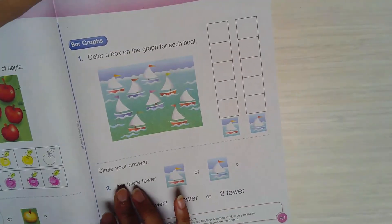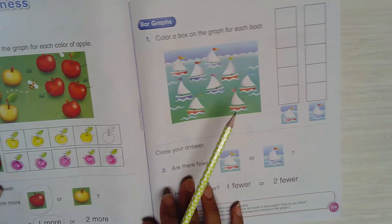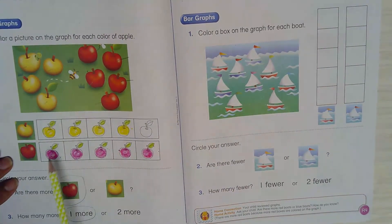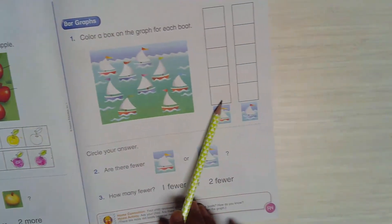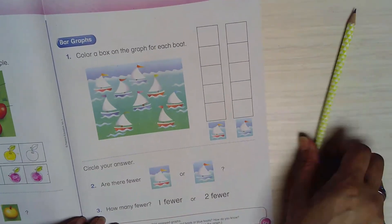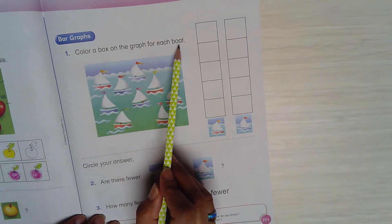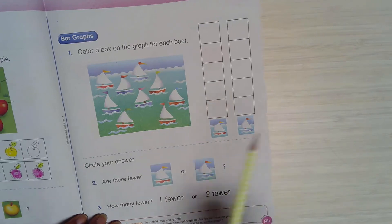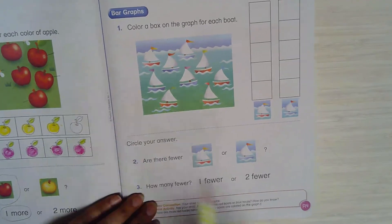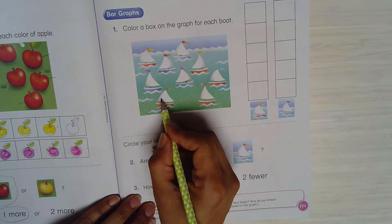This is another activity, but this time instead of you having picture like here and you're counting, you have it in bar - we call this a bar. So what are you gonna do? You're gonna color a box on the graph for each boat. So you have red and you have blue. You do the same way you did here - count how many red boat. So one, two, three, four, five. That means you need to color five boxes.